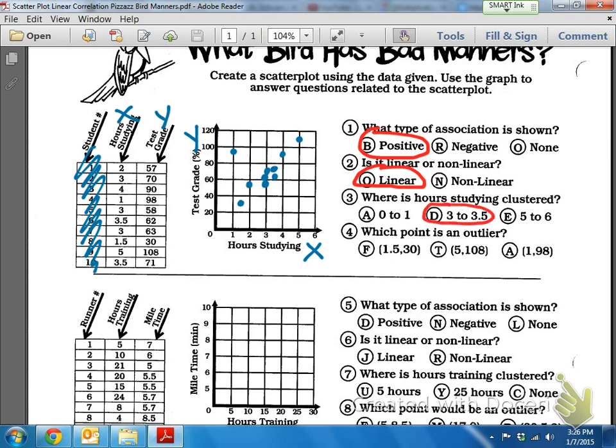And then the last one, number four, which point is an outlier? So, again, looking at this graph, all these points seem to be right next to each other. Who's the odd one out or who looks like an outsider? It's this one right here. It looks like he doesn't even belong in this graph. If we could redo it, we'd probably throw that out. But it's still important in a scatter plot to keep it. And that's what an outlier is. It's the one that really doesn't belong. And so what point does that? It looks like that is 1, 98.